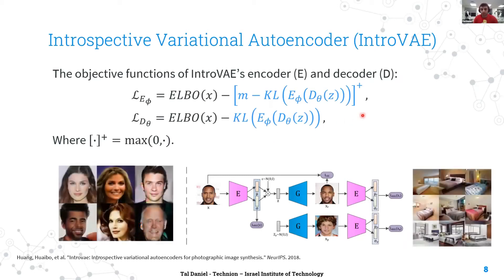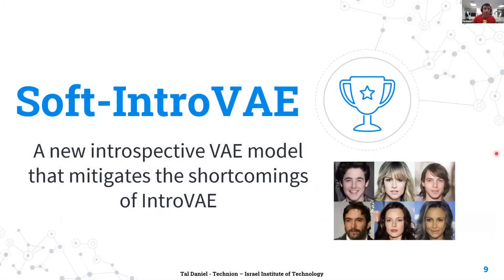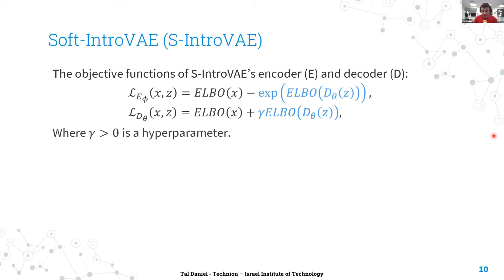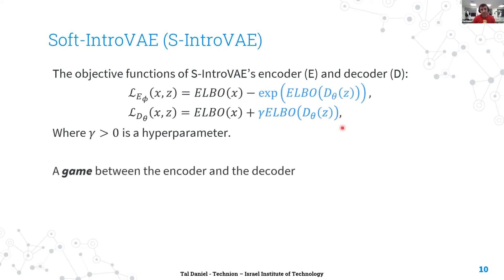In practice, Intro VAE is known in the community to be unstable and very hard to train, though it reports really nice results on images. We now introduce Soft Intro VAE, a new introspective VAE model that mitigates the shortcomings of Intro VAE — mainly the training instability due to the hard threshold function and the fact that the full optimization objective lacks theoretical justification. Soft Intro VAE removes the hard margin threshold and the M hyperparameter, and utilizes the complete ELBO term rather than just the KL term for real and fake data.